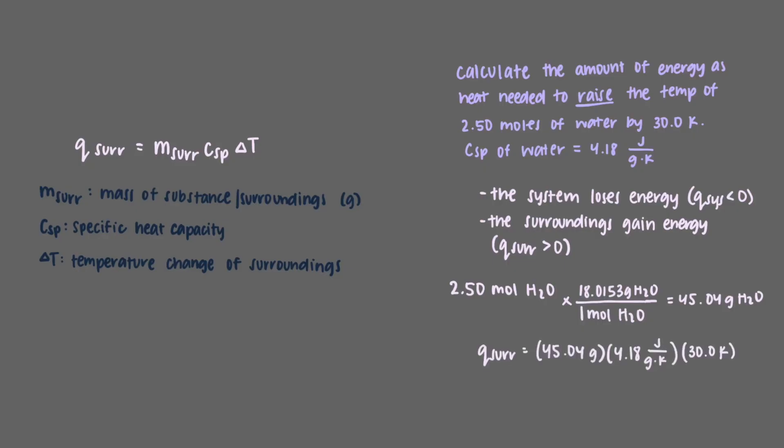When we multiply this value by the given specific heat capacity and the given change in temperature, we get that the amount of energy as heat needed for this process to occur is 5,650 joules. Notice that the value of q of the surroundings is positive. We expected this because the surroundings are gaining energy.